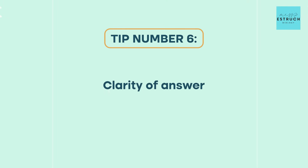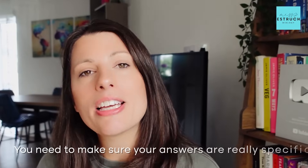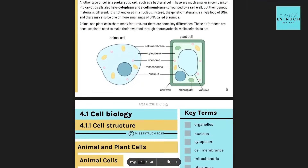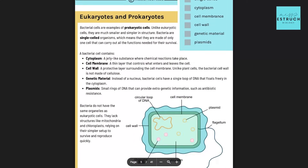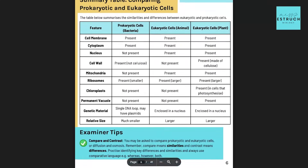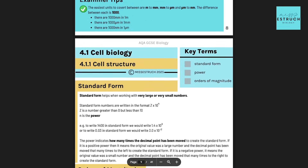Tip number six is clarity of answer — specifically your use of key terms and keywords, because the mark schemes are very specific. You need to make sure your answers are really specific. If you're not sure on the key terms you need to know, I have all of that covered in my GCSE notes. You can purchase Paper Two of my notes, which covers all the theory, key terms, examiner's tips written by an actual examiner, topic summaries, and end-of-topic retrieval questions. I'll link that in the description below.